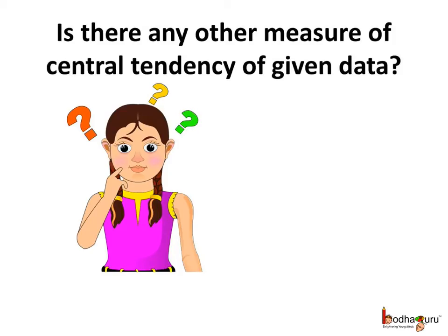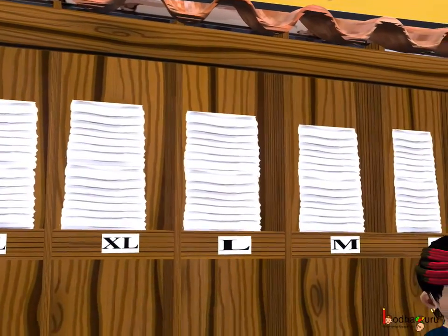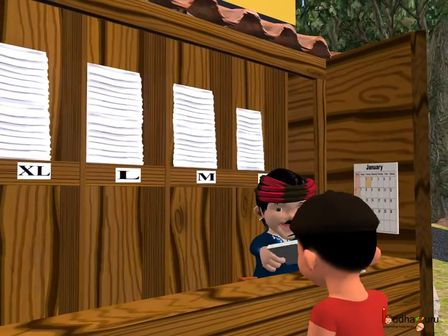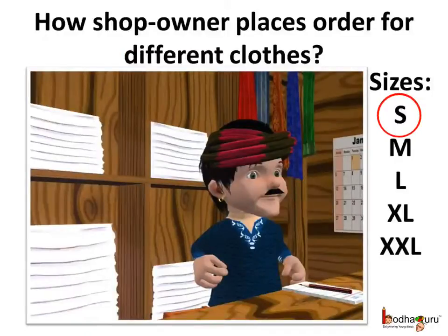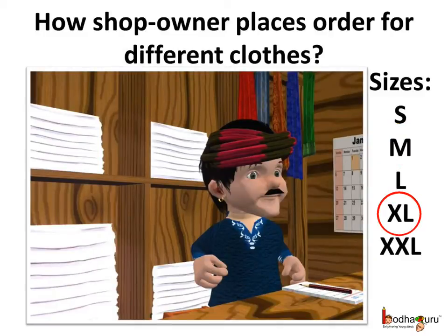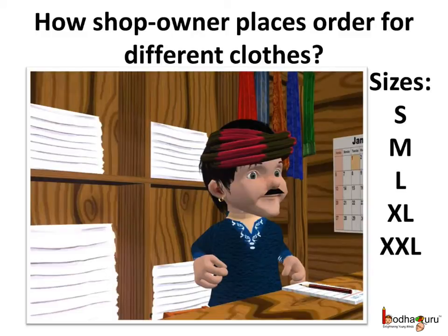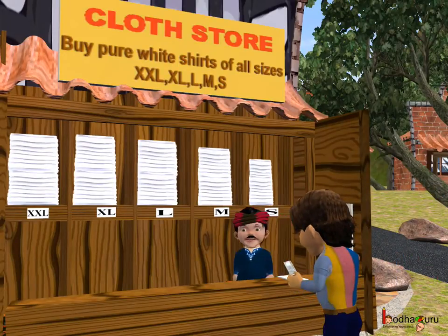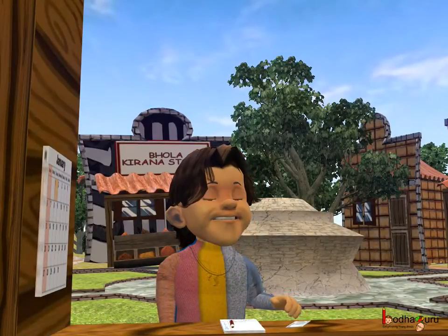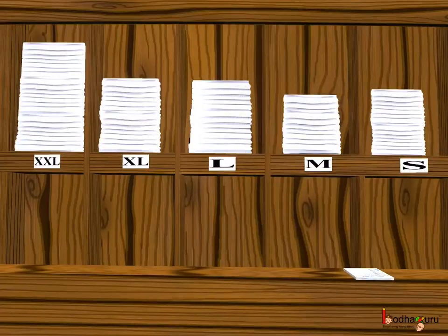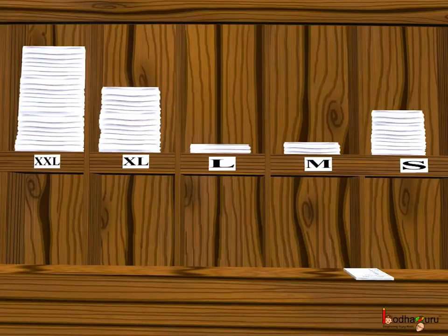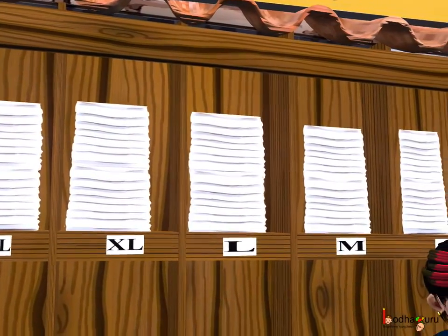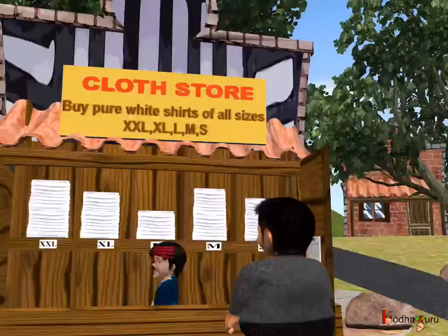Is there any other measure of central tendency of given data? Let us find out. As we saw in the story, in a cloth shop the seller sold many sizes of white shirt: small (S), medium (M), large (L), extra large (XL), and double XL. But all the sizes were not equally popular — very few people needed double XL, while medium and large were very common. Still, the shop needed to keep double XL and XL sizes as people needed those too.